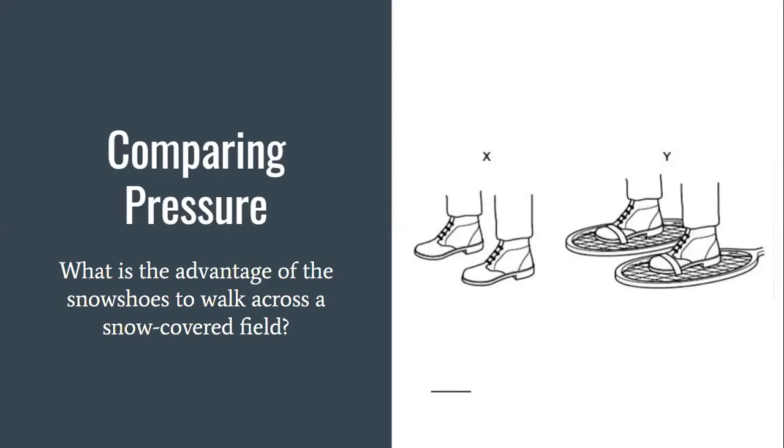Let's try another. Looking at person X is wearing just boots and person Y is wearing boots with snowshoes. What is the advantage of the snowshoes to walk across a snow covered field? If you said that it increases your surface area therefore decreasing your pressure you were right. Since it increases that surface area there's not as much pressure pushing down in the snow. If you've ever trudged through a deep snow bank you know how difficult it is to keep lugging your feet out from the deep snow. So if you were wearing just boots you have a smaller surface area, your weight pushes the pressure into the ground and your feet sink all the way down.